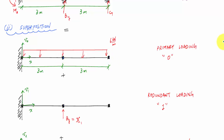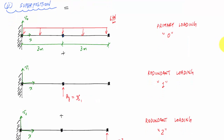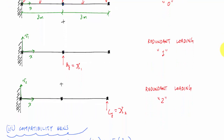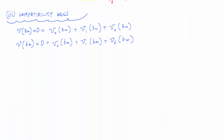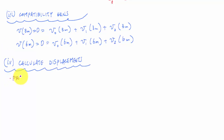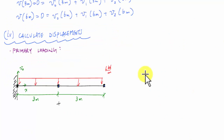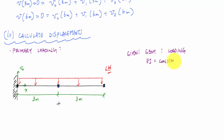I can choose any approach I want — if I've got charts I can use the charts. I'm going to go ahead and use double integration just to demonstrate the double integration method. So I'm going to calculate displacements starting with the primary structure. It's essentially a basic double integration problem where I'm given geometry and loading.